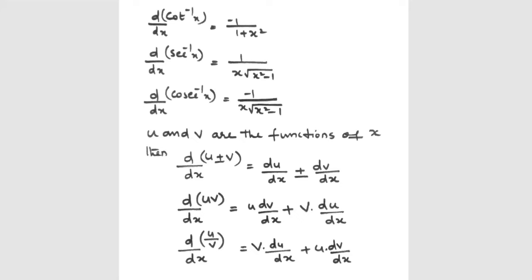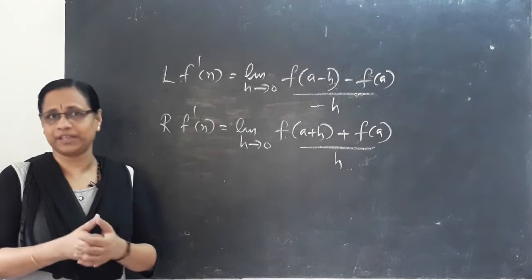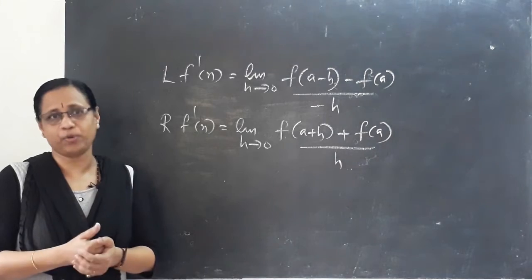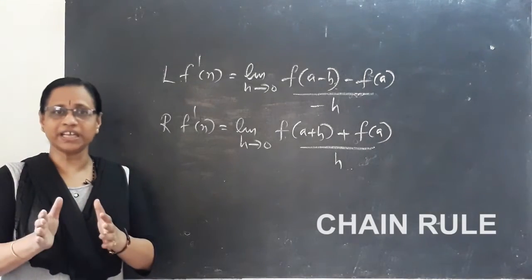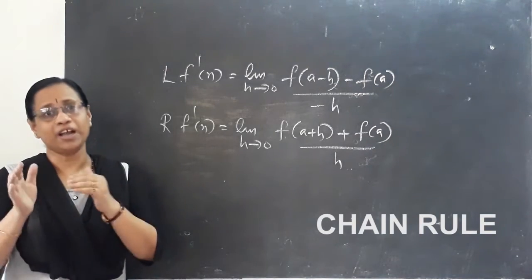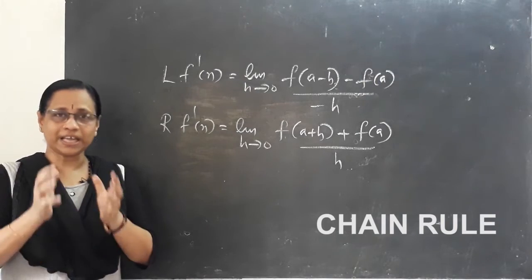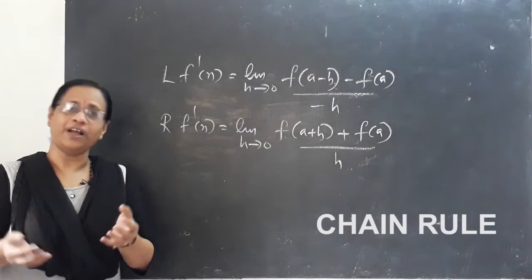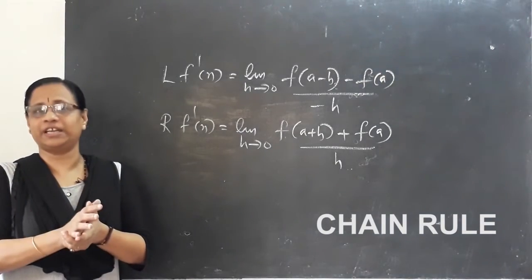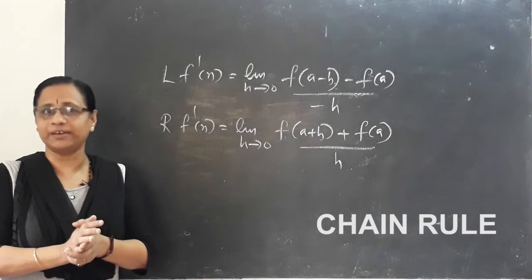Now the second method is the chain rule. I call it function of a function rule — that means one function is inside another function. It is called the chain rule.